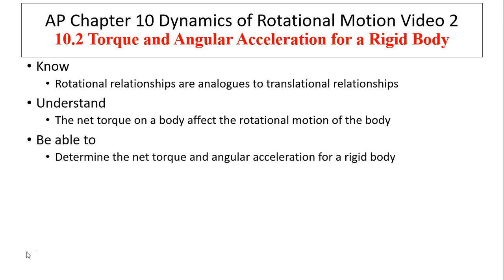The objectives are: know that rotational relationships are analogous to translational relationships. So what we have learned for translational motion, we can derive the same thing — they are the same set of relationships for rotational motion. Understand that the net torque on a body affects the rotational motion of an object. Be able to determine the net torque and angular acceleration for a rigid body.